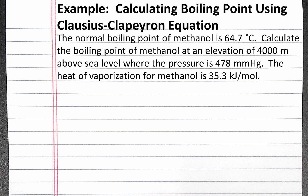In this example problem, we'll calculate the boiling point of methanol using the Clausius-Clapeyron equation. The normal boiling point of methanol is 64.7 degrees Celsius. Calculate the boiling point of methanol at an elevation of 4,000 meters above sea level where the pressure is 478 millimeters of mercury. The heat of vaporization for methanol is 35.3 kilojoules per mole.